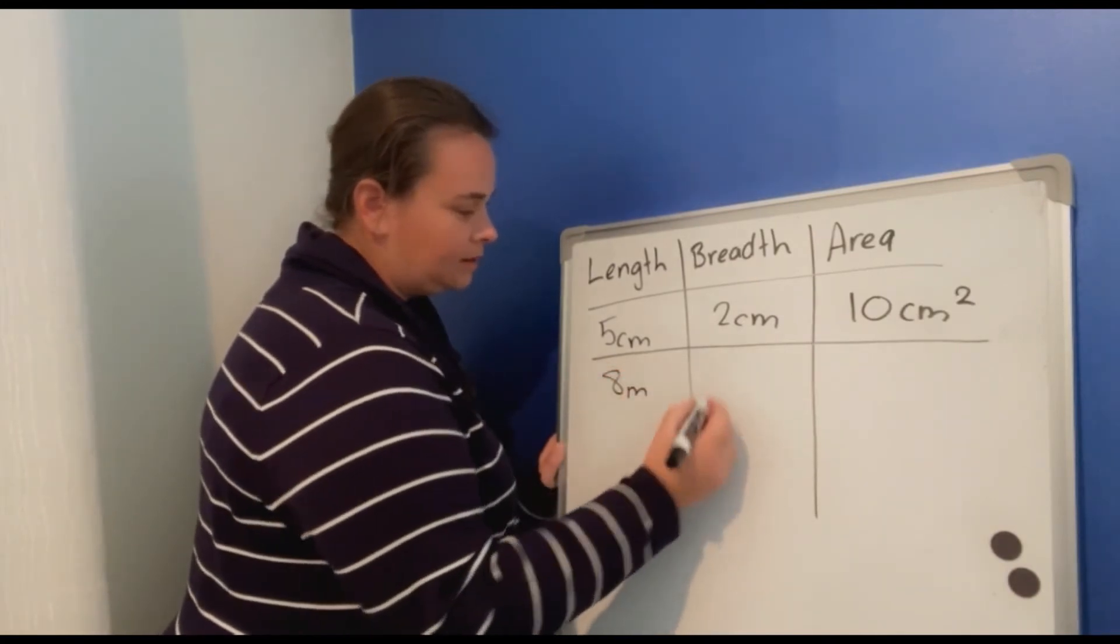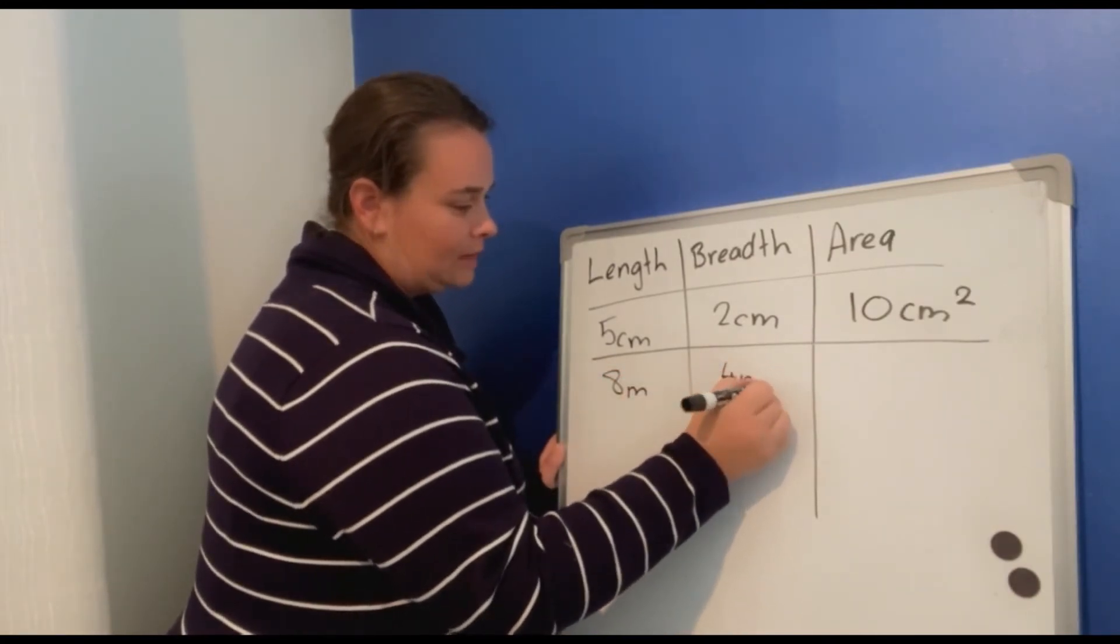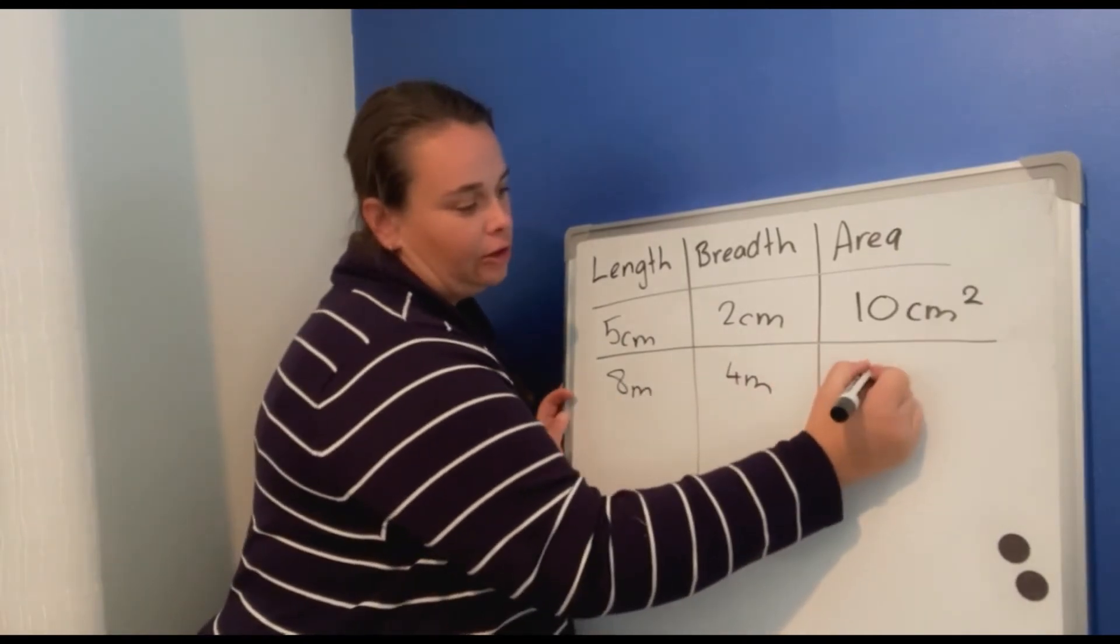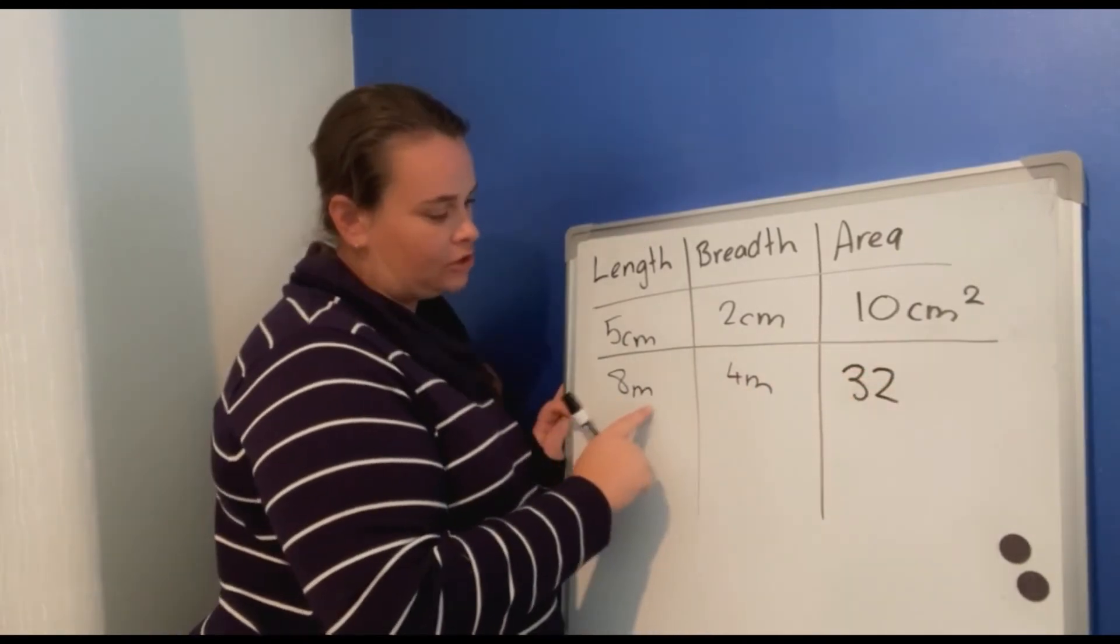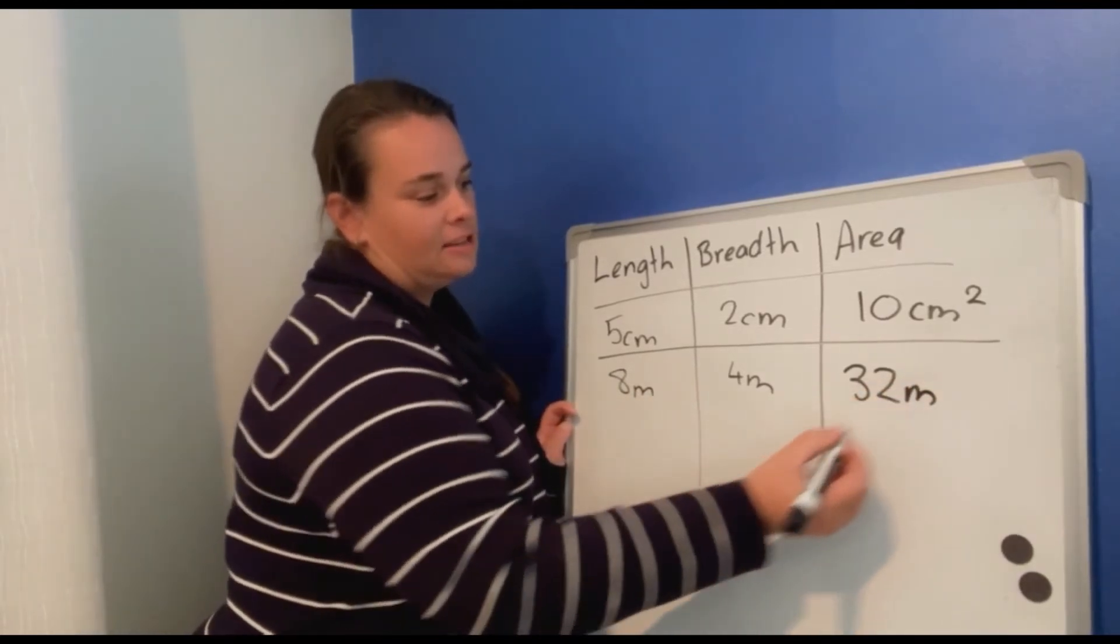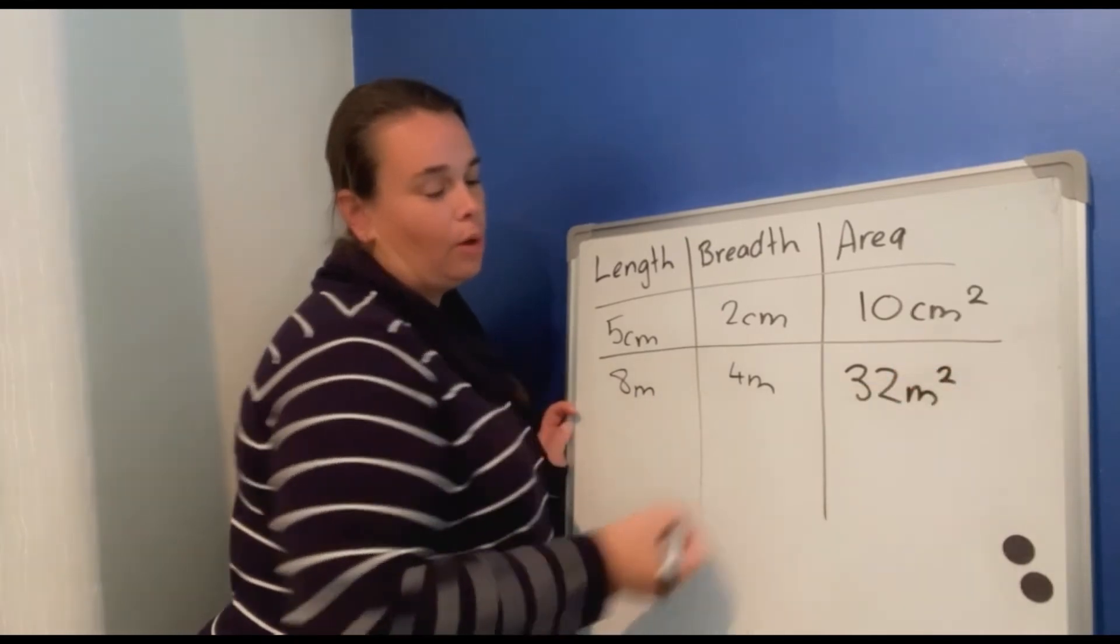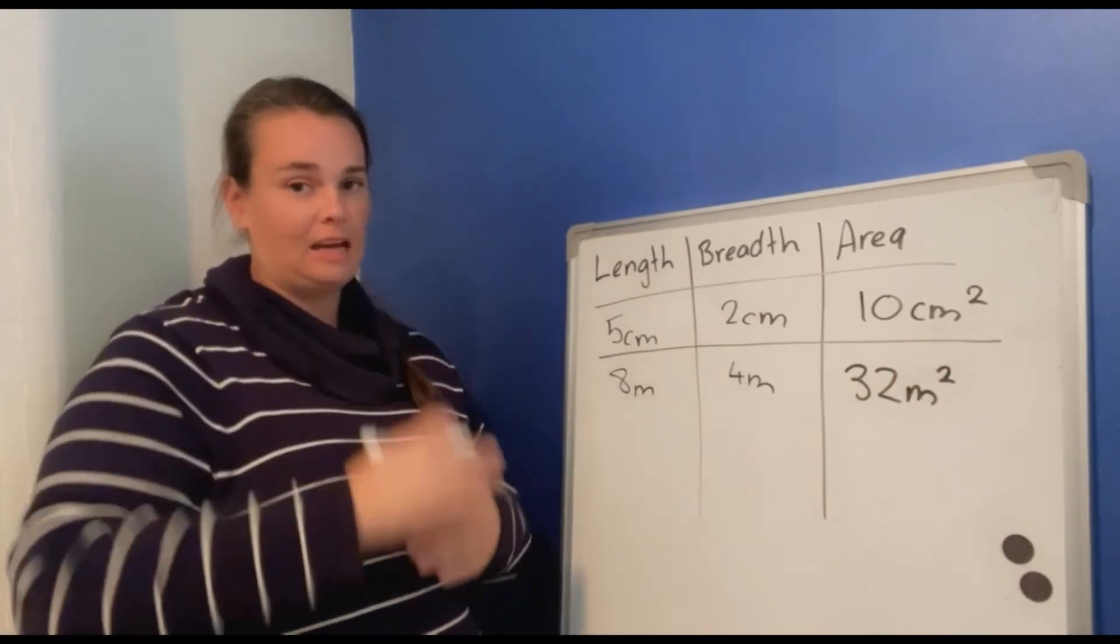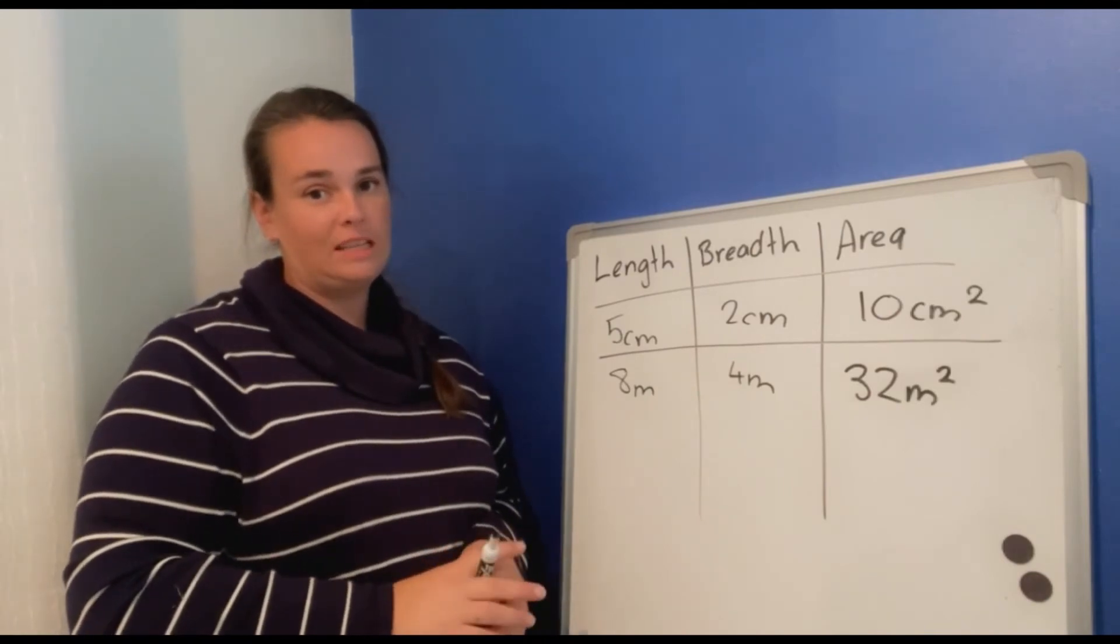Eight meters by four meters. Eight times four is 32. Our measurement this time is meters, so we put the m to show meters. And again, the little two on top to say that we have squared the inside of the shape, which is our area.